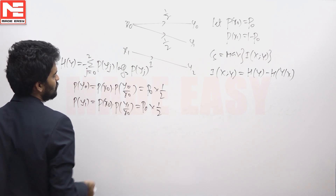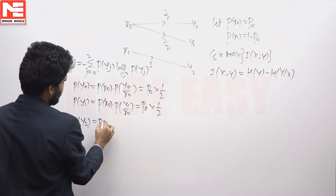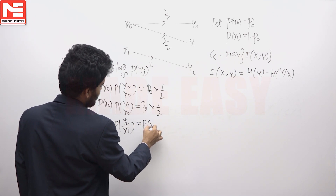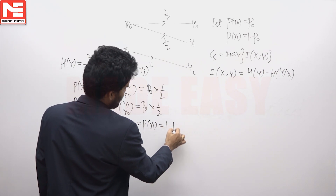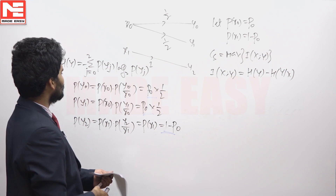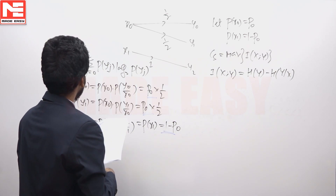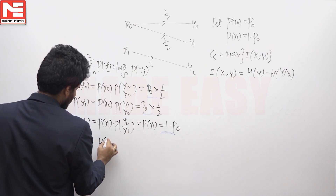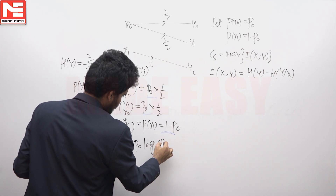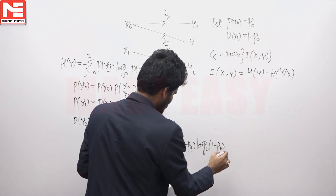For P(Y2), the only possibility is that X1 is emitted and received as Y2, so it is simply P(X1), since P(Y2|X1) = 1. Therefore P(Y2) = 1 - P0. With these probabilities, H(Y) simplifies to minus P(Y0) log base 2 of P(Y0)/2 plus (1 - P(Y0)) log base 2 of (1 - P(Y0)).